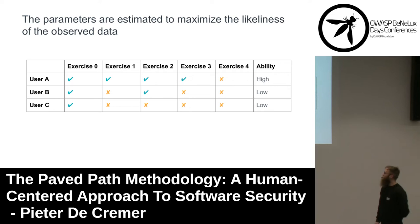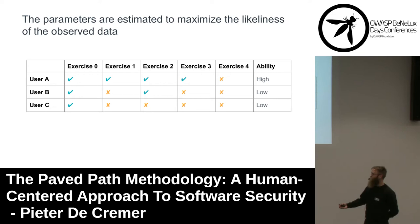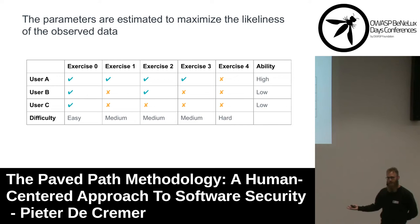We can do the same for the exercises. Exercise 4 is answered incorrectly by all users, even those of high ability, so it is most likely a difficult exercise. Exercise 0, on the other hand, is answered correctly by all users, even those of low ability — so it is most likely easy. And exercises 1, 2, and 3 fall somewhere in the middle. So we just configured and trained our model based on the observed data, and now we can learn something from it.